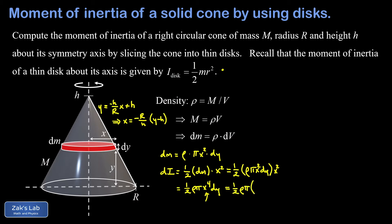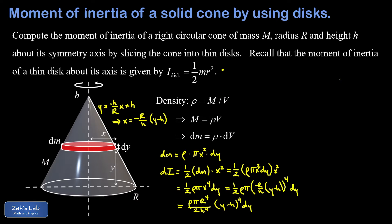Substituting that expression for x into our moment of inertia contribution, dI equals one half·rho·pi times (negative R over h times (y minus h)) to the fourth power times dy. Cleaning things up, we get R⁴ over h⁴ coming out of the parentheses, so dI equals rho·pi·R⁴ over (2h⁴) times (y minus h)⁴ dy. Now that dI is expressed entirely in terms of the single variable y, we're ready to integrate.